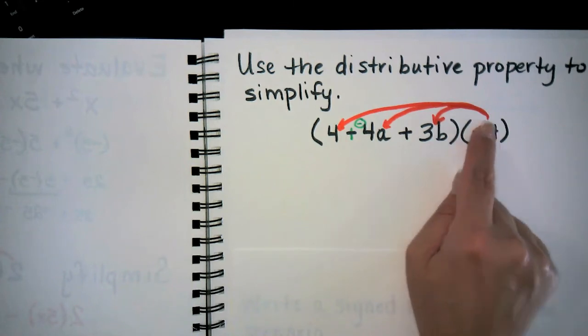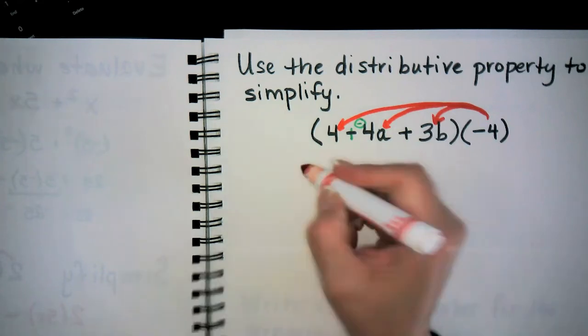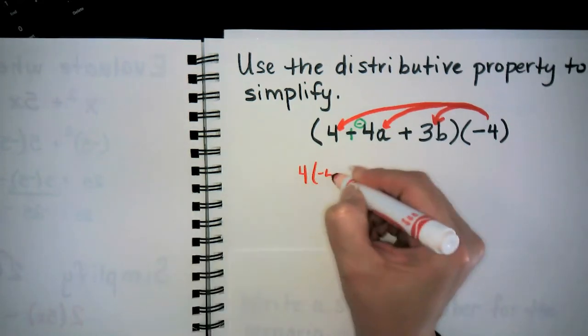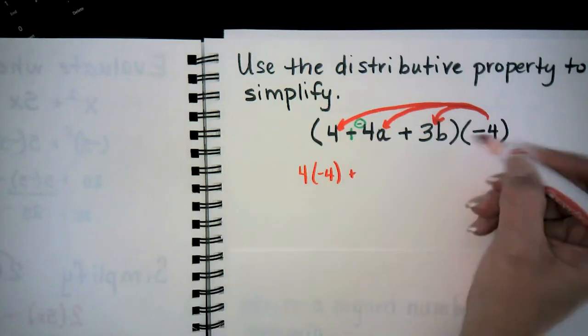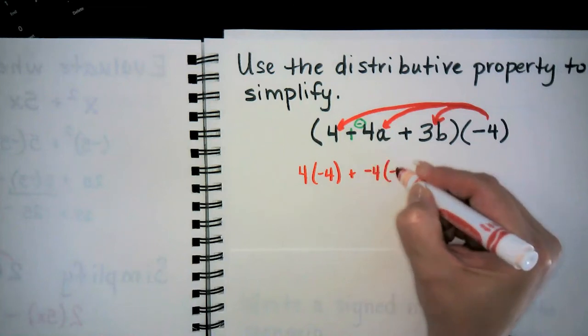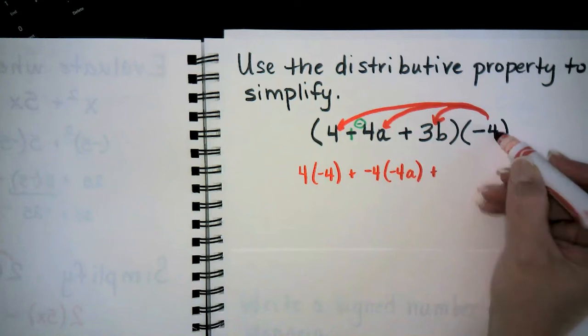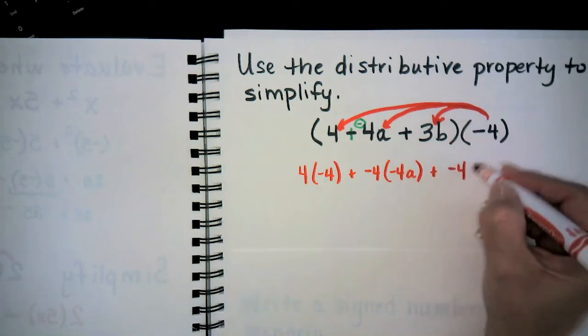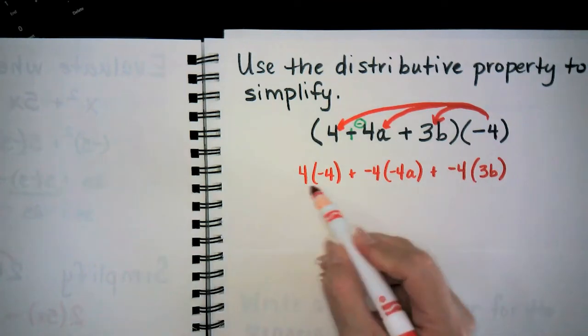So let's do that. We'll do negative 4 times 4, so 4 times negative 4 there. Then we'll have plus negative 4 times negative 4a, then the plus, then we'll have negative 4 times 3b.